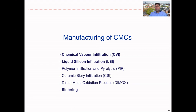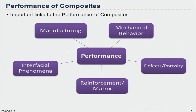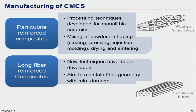We can look at some generic information related to the manufacturing of CMCs before examining individual processes. Several parameters need to be considered under performance: manufacturing, interfacial phenomena, interface, mechanical behavior, and porosity. For particulate or short fiber reinforced composites, we can use hot pressing or powder techniques, starting with ceramic powders — this is well established. For long fibers, more techniques need to be developed; it is still under development.